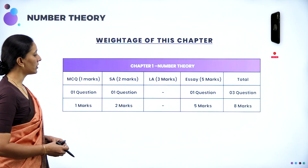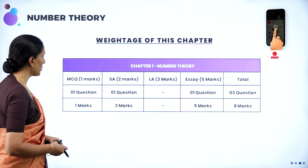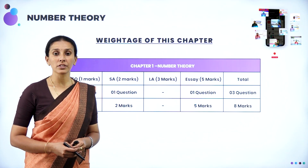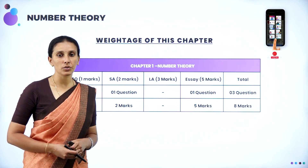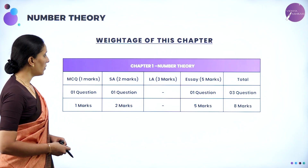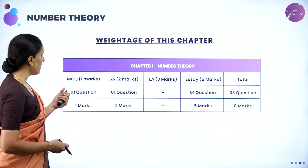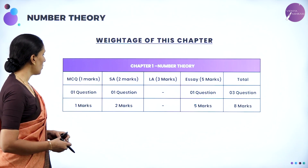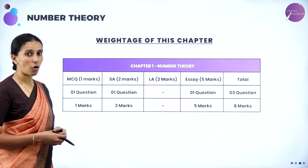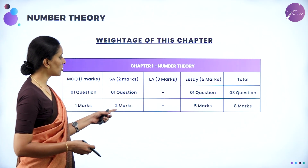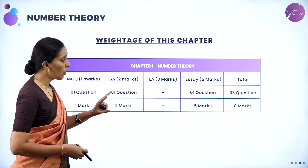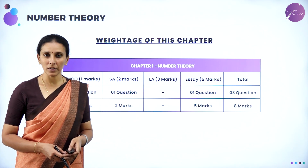Let us see the weightage of the chapter for the year 2023-24. In this year they have introduced multiple choice questions for the first 20 marks, so you are attending your theory part for 80 marks. From the chapter Number Theory, there will be one MCQ for one mark, one short answer for two marks, and one long answer for five marks — so overall three questions totaling eight marks from this chapter.